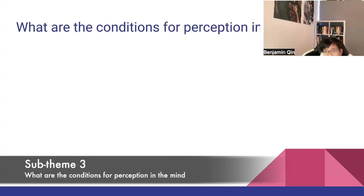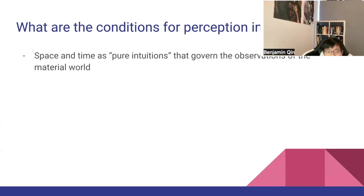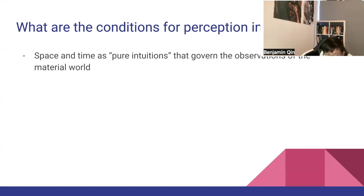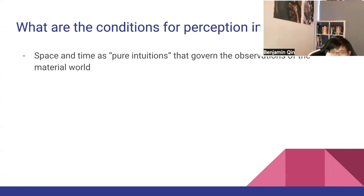What are the conditions for perception in the mind? In the mind, we have space and time as pure intuitions that govern the observations of the material world. This was explored in a section of Kant's Critique of Pure Reason called the Transcendental Aesthetic, which deals with the elements of Kantian philosophy. He discussed space and time as fundamental to the human experience, calling these pure intuitions because space and time cannot be empirically known — they must be known a priori, and thus are not polluted by experience in any way.